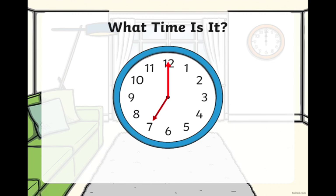Now, let us see how smart you are. What time is it? The minute hand is pointing at the 12, and the hour hand is pointing at the 7. So what is the time? It is 7 o'clock. If you guessed it correctly, well done!